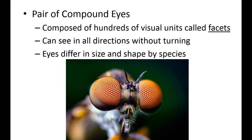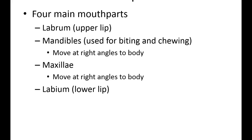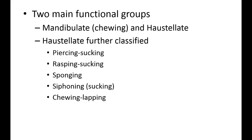Insects have four main mouthpart types: the upper lip (labrum), mandibles for biting and chewing, maxillae which help put things in the mouth, and the lower lip (labium). There are six different types of insect mouthparts in total: mandibles for chewing, and five others under the haustellate category — piercing-sucking, rasping-sucking, sponging, siphoning, and chewing-lapping. Examples of each are in the slides.